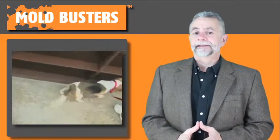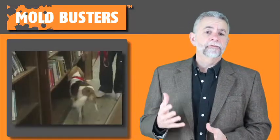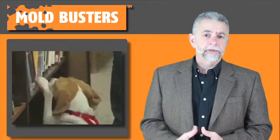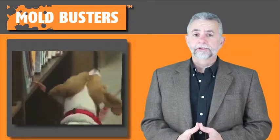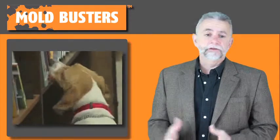A mold dog is trained to detect at least 18 different kinds of the most common toxic molds. For dog alerts, there is a mold issue which signals a moisture problem, such as a leaky pipe.